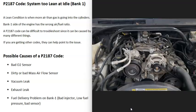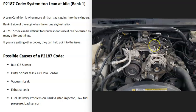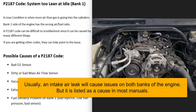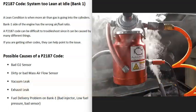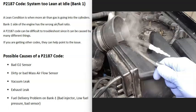A vacuum leak or intake air leak can also cause this. All air going into the engine should pass through the throttle body controlled by the computer, but if air is getting in another way it can cause a lean condition. This could be from a broken hose, a bad gasket, or something similar. A common method to find a vacuum leak is using a smoke machine — you feed smoke into the intake and wherever it comes out, that's where the leak is.